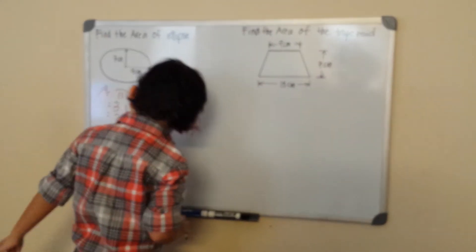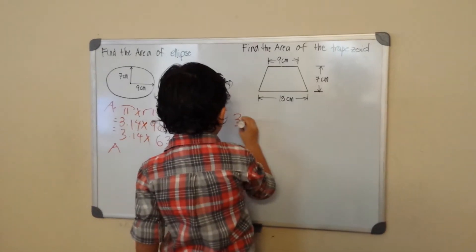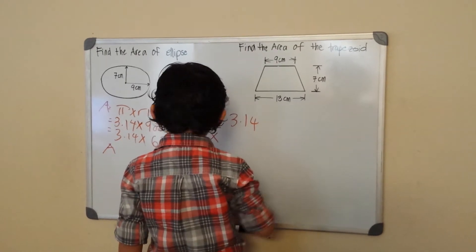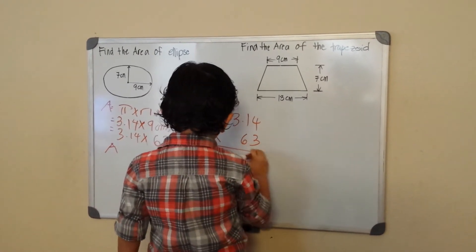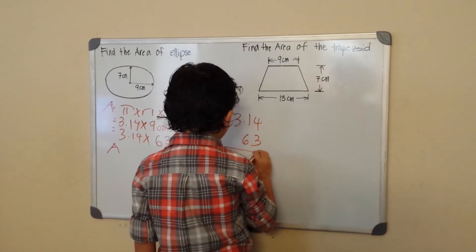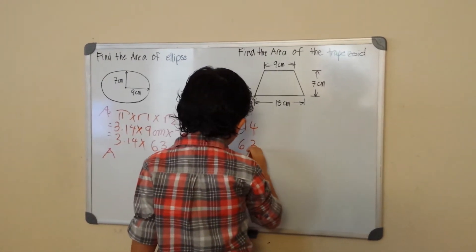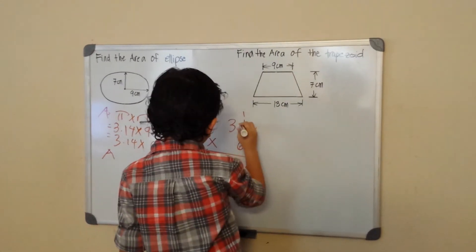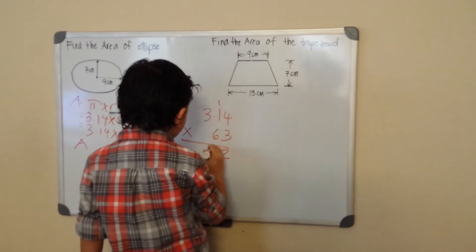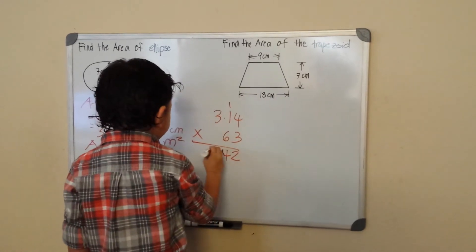What's 3.14 times 63? Let me check. So 3 times 4 is 12, carry the 1. 3 times 1 is 3, plus 1 is 4. 3 times 3 is 9.